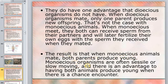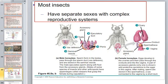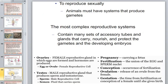Monoecious animals are often slow-moving, and there is an advantage to having both animals produce young when encounters are rare. Most animals — most insects — have separate sexes with complex reproductive systems different for female and male.